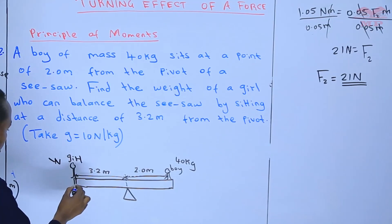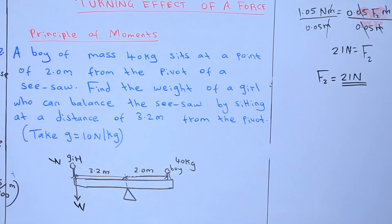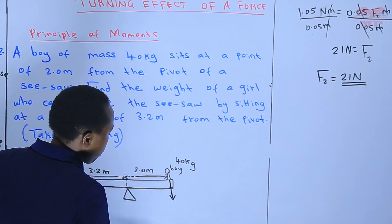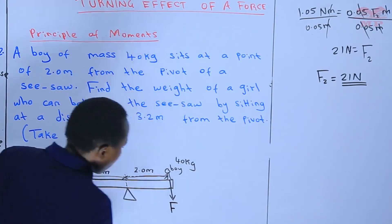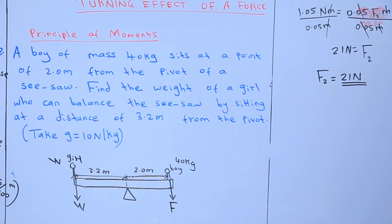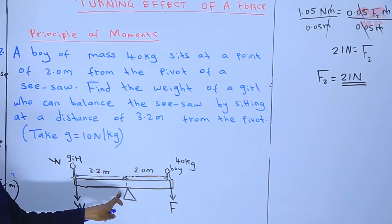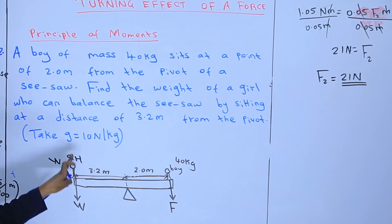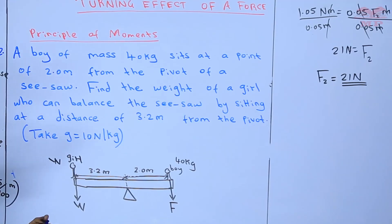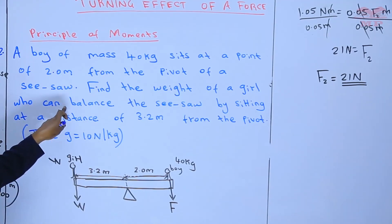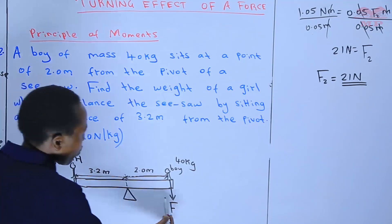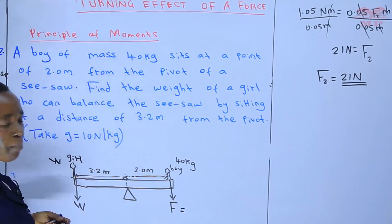The weight of the girl will act in a downward direction. When the boy sits on his side, he will exert some force downward as well. The boy is on one side, the girl is on the other side. We know the distance from the boy to the pivot and can calculate his force. We know the girl's distance from the pivot, but not her weight — that is what is in question. We are told the girl balances the boy, so the system is at equilibrium.